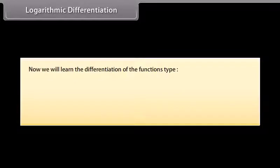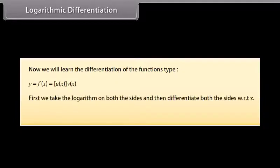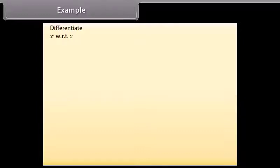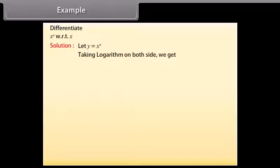Logarithmic Differentiation: We will learn the differentiation of functions of the type y = f(x) = u(x)^(v(x)). First we take the logarithm on both sides and then differentiate both sides with respect to x. This process is called logarithmic differentiation. Example: Differentiate x^x with respect to x. Solution: Let y = x^x. Taking logarithm on both sides, we get log y = x · log x.